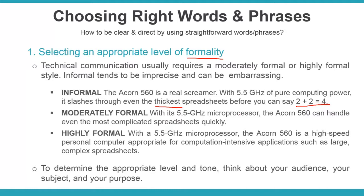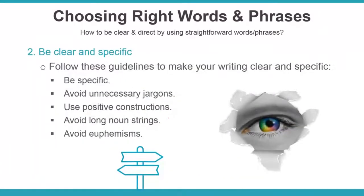A formal version: 'With its 5.5 gigahertz microprocessor, the Doc 1 560 can handle even the most complicated spreadsheets quickly.' Even more specific: 'With a 5.5 gigahertz microprocessor, the Doc 1 560 is a high-speed personal computer appropriate for tasks such as large, complex spreadsheets.' Think about your audience and subject when choosing formality level. To make things clear and specific: avoid jargon, avoid long noun strings, and avoid euphemisms.